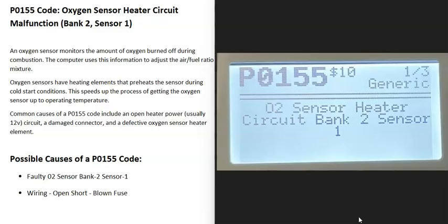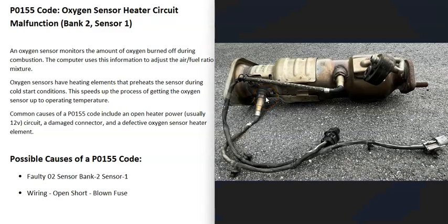There are oxygen sensors down on the exhaust that do two things. First, they monitor the catalytic converter, and second, they monitor how much oxygen was burnt off during combustion. The computer uses this information to adjust the air fuel ratio mixture going into the cylinders.